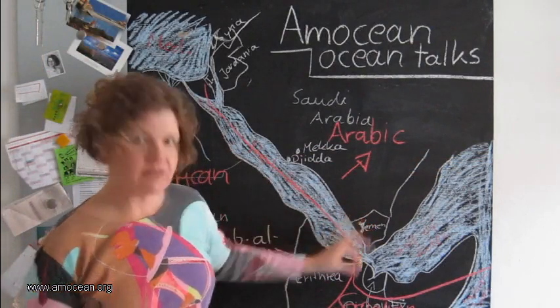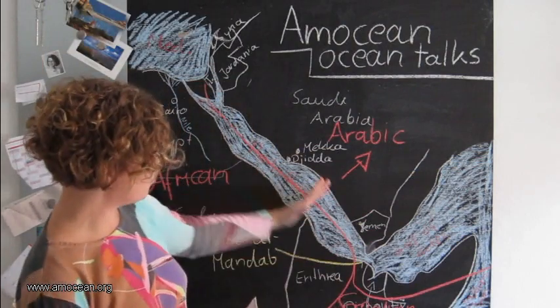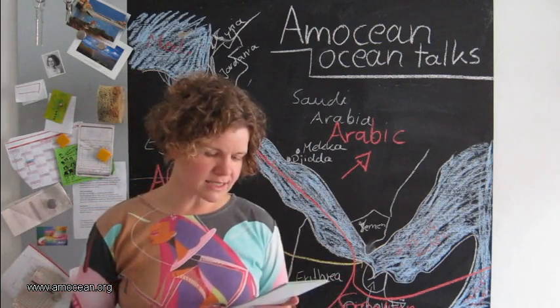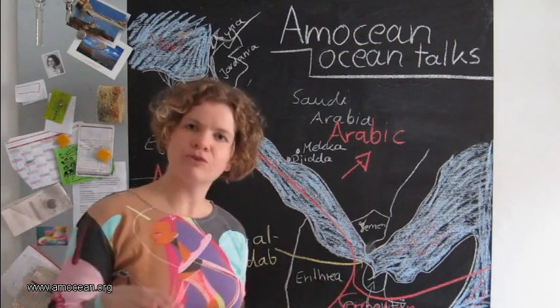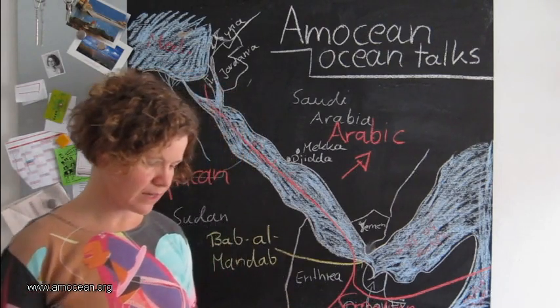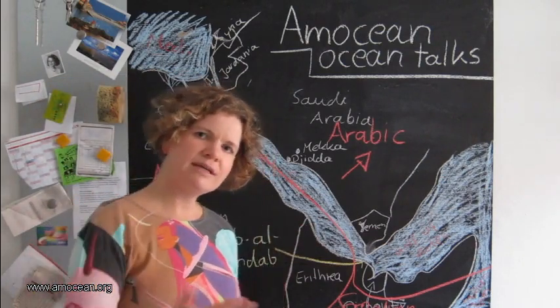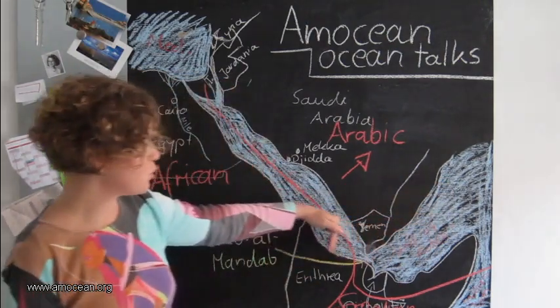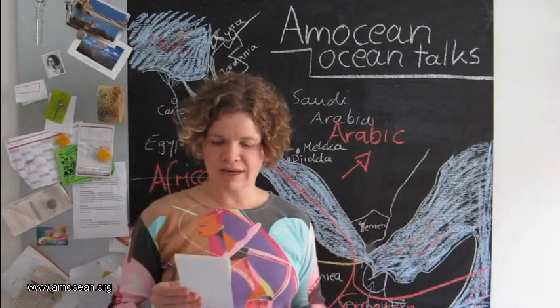The narrowest point and also the most shallow point, when we consider the whole width of the sea, is here again at the Bab al-Mandab. This is only 26 kilometers or 16 miles wide and 130 meters or 426 feet deep. You can imagine if we have there such a bottleneck, there's only very little exchange of water possible, very little inflow of water from the Indian Ocean and very little outflow from the Red Sea.